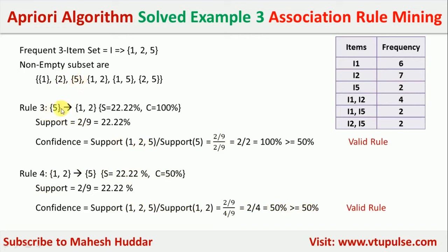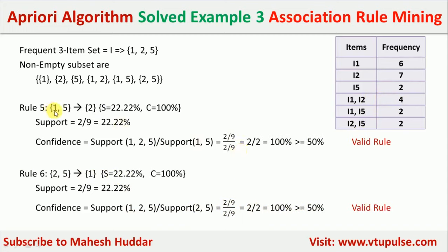Rule 3: {5} → {1, 2}. Support = 22.22%. Confidence = (2/9) / (2/9) = 100%, greater than 50% — valid rule. Rule 4: {1, 2} → {5}. Confidence = (2/9) / (4/9) = 2/4 = 50% — valid rule. Rule 5: {1, 5} → {2}. Confidence = (2/9) / (2/9) = 100%, greater than 50% — valid rule.